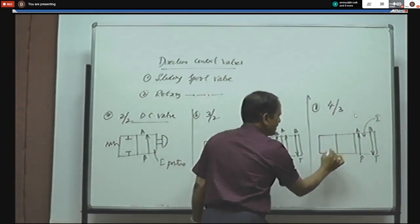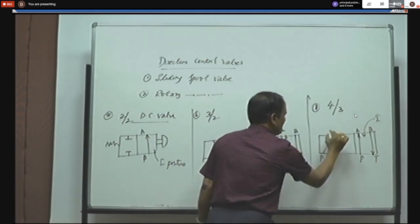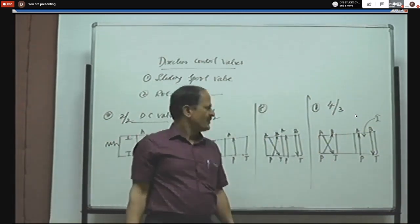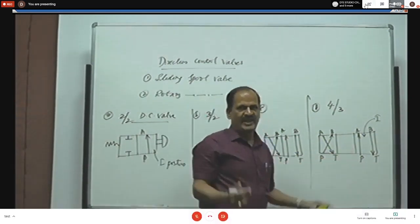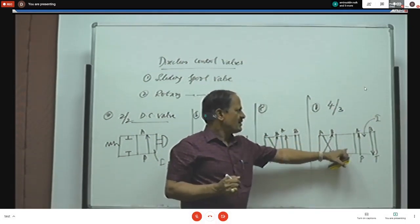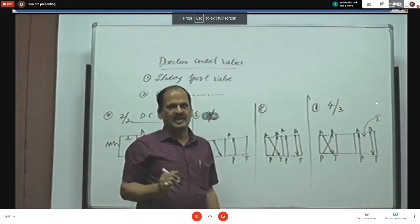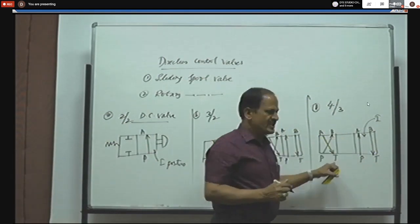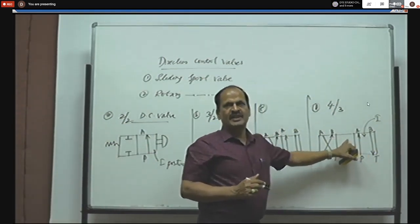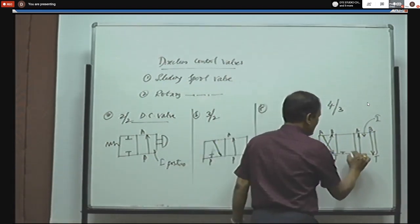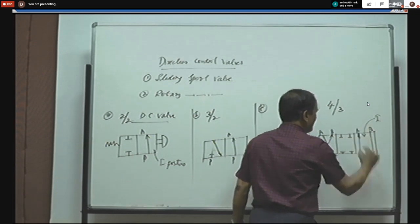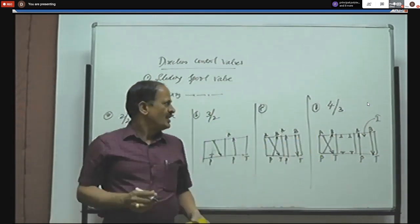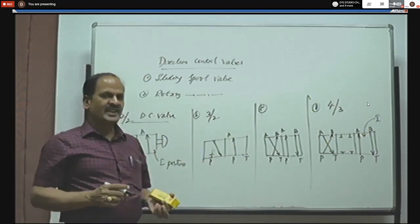In the neutral position — 4x3 DC valves are most commonly activated by a hand lever, not a push button (push button is used only for 2x2 and 3x2) — whenever the sliding spool is in neutral position, all the ports P, A, B, and T are closed and no actuators are activated. This is called the neutral position of the DC valve. The middle box always represents the neutral position. This is the symbolic representation of the 4x3 DC valve.